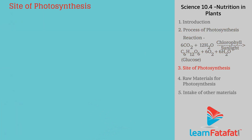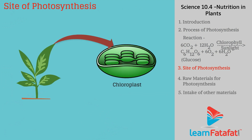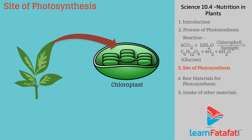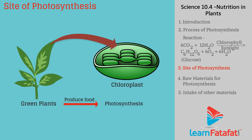Site of photosynthesis: Photosynthesis occurs in chloroplasts. Since chloroplasts are only present in green plants, only green plants can produce food by photosynthesis.